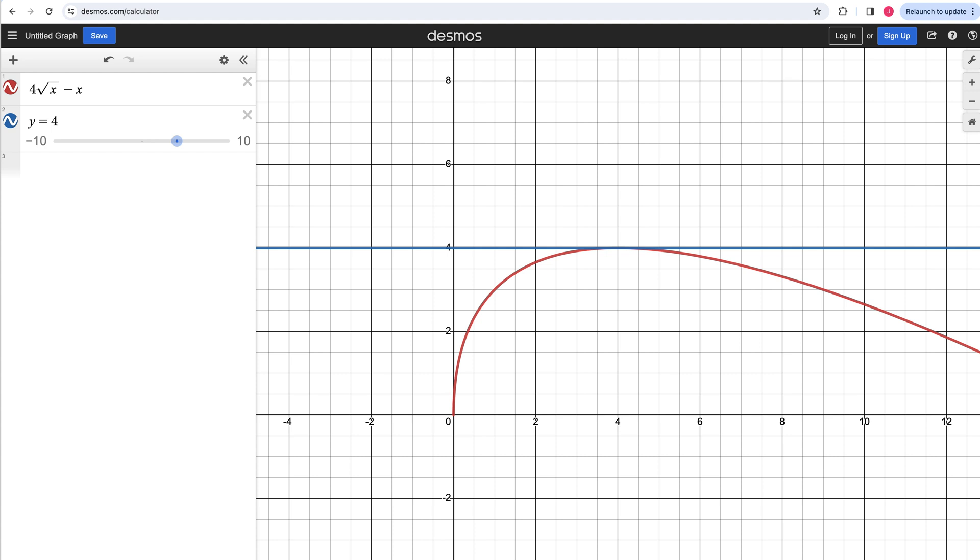giving us that horizontal tangent line at the point x equals 4. Or more specifically, the point 4 comma 4. There we go. We can even put that point in there. And then I've also drawn in the horizontal tangent line, which turns out to be the line y equals 4. So we can see how that looks. So everything checks out.